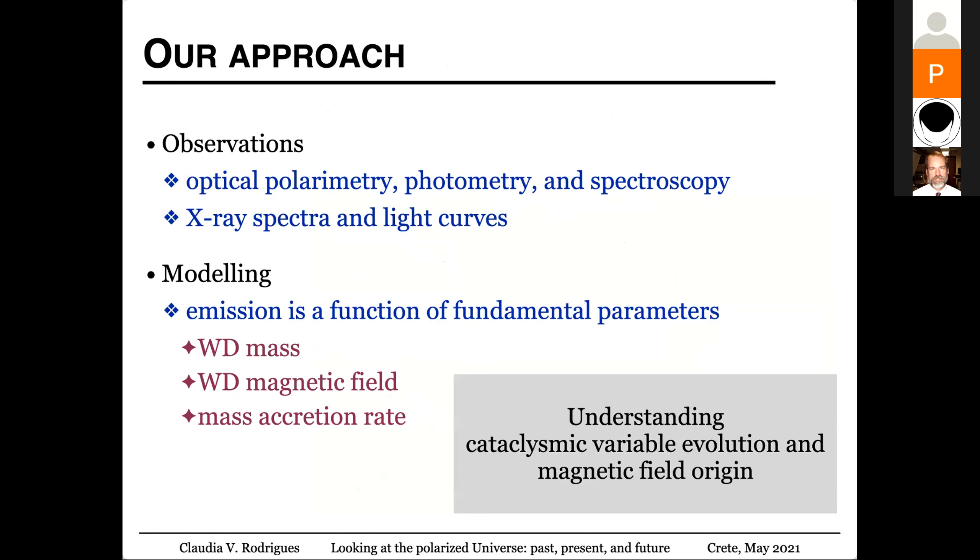And with this, we can understand the cataclysmic variable evolution, and more important, the origin of the magnetic field in those magnetic cataclysmic variables. This is by far, we don't know how the magnetic field is formed in this system.